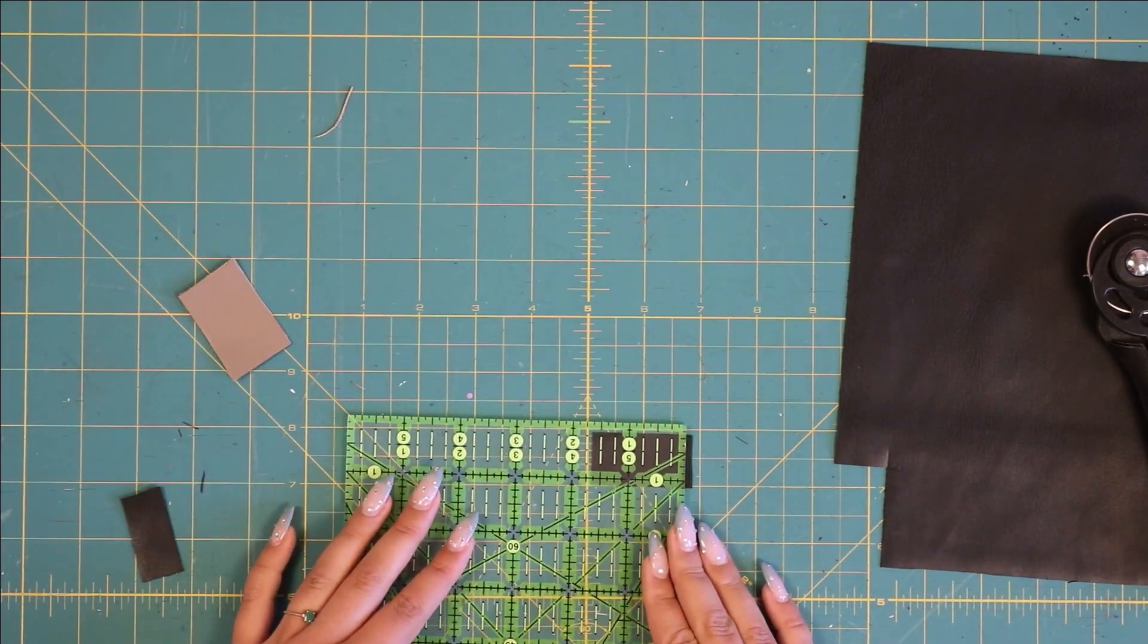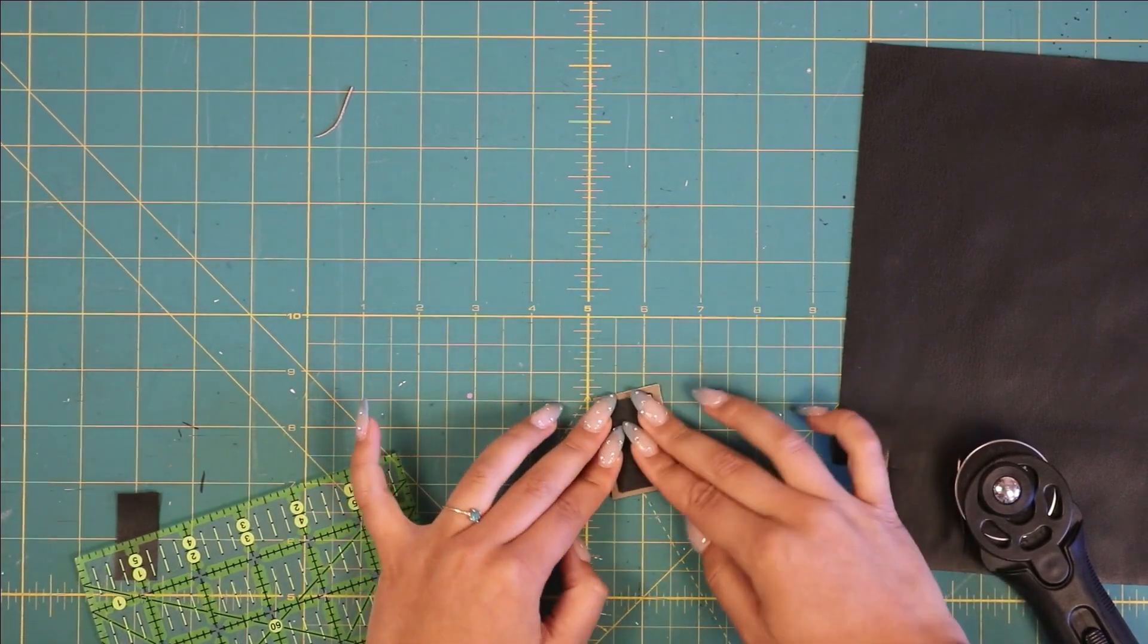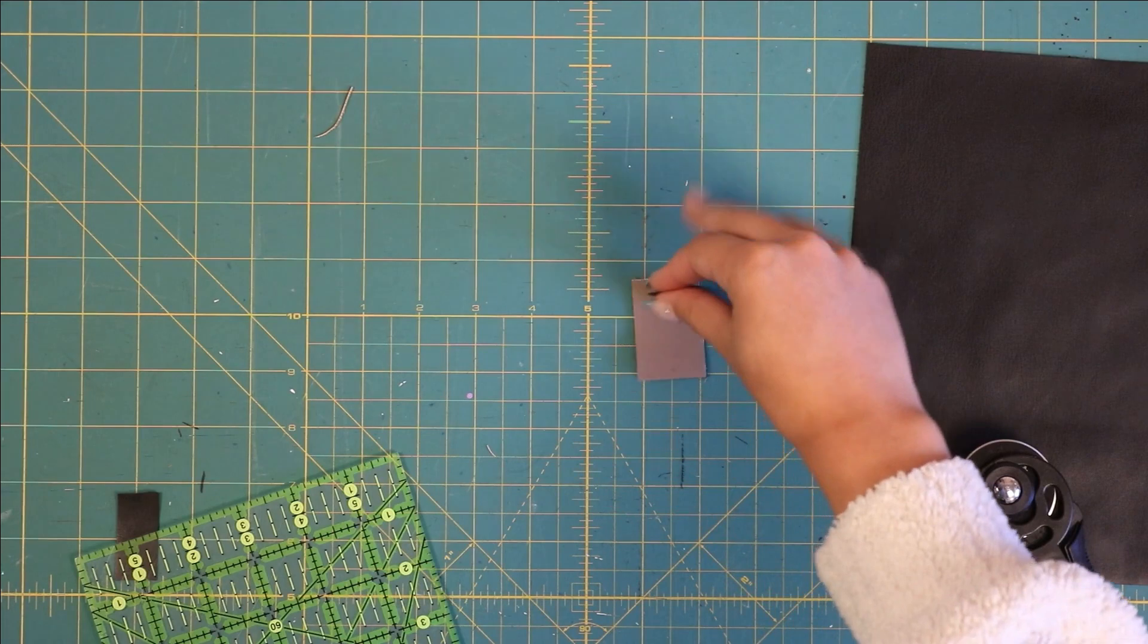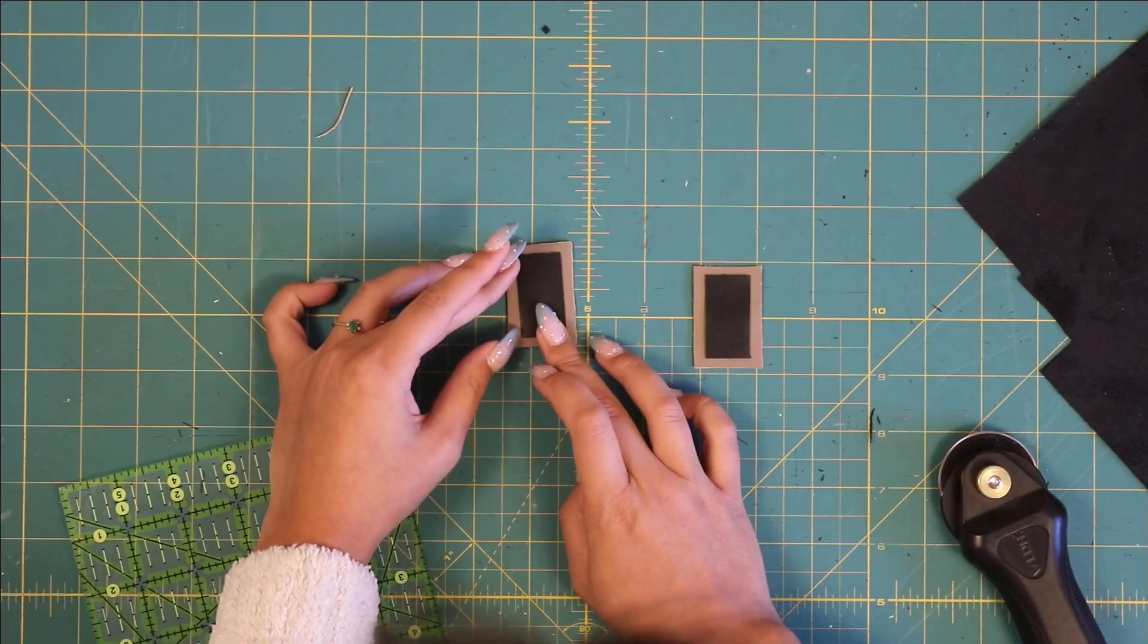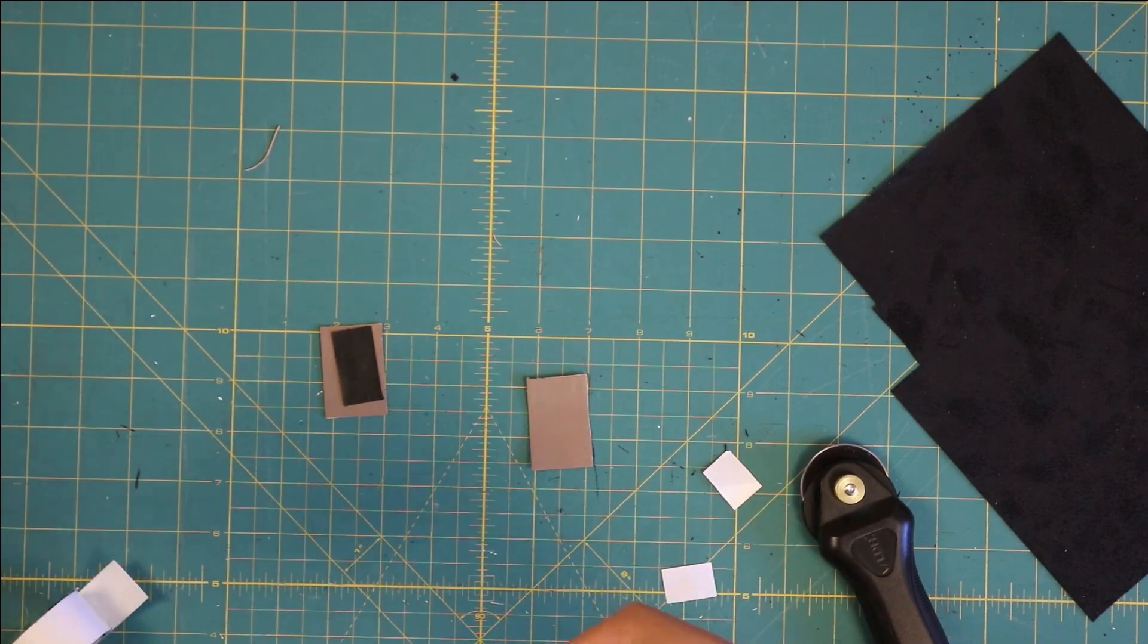Now I'm just going to cut out two rectangles that are smaller than our original rectangles, again just kind of eyeballing it to see how much of the other rectangle I want shown around the border. I'm also going to grab my double-sided tape and stick it down before I sew it on. You honestly do not have to sew it on at all because it's already stuck together, but I just liked that top stitching look.